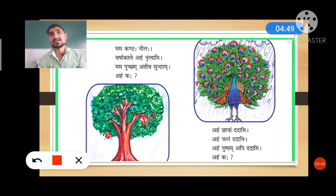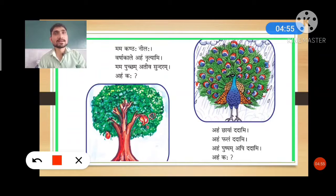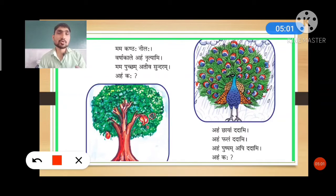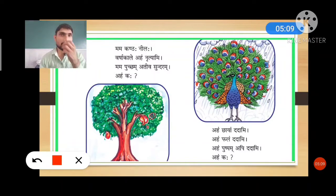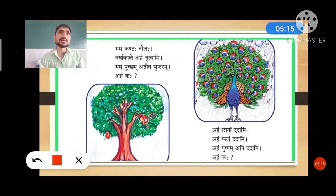The proper translation: mama kantaha nilaha means 'my neck is blue.' Varsha kale aham nrityami means 'at rainy time I dance.' Mama puccham ativa sundaram means 'my feathers are very beautiful.' Aham kaha — 'who am I?' That is the concept of these four lines, and the answer in the picture is peacock.